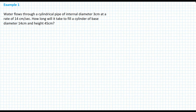Our first example reads: Water is flowing through a cylindrical pipe of internal diameter 3 centimetres at a rate of 14 centimetres per second. How long will it take to fill a cylinder of base diameter 14 centimetres and height 45 centimetres?